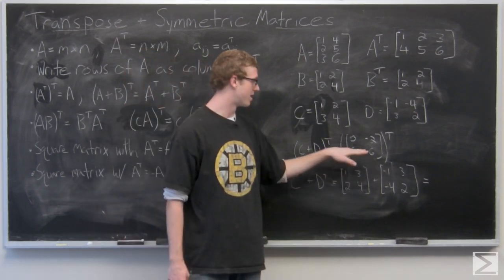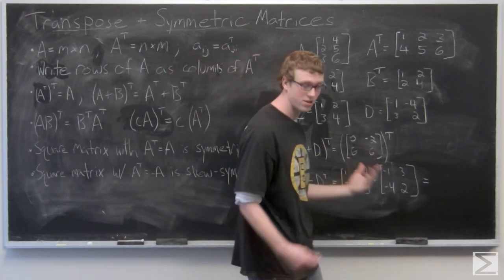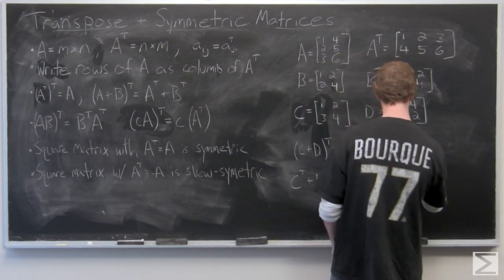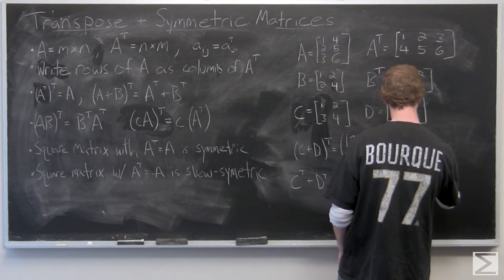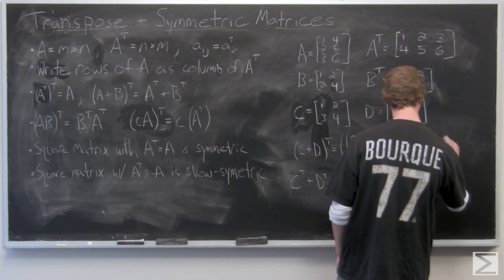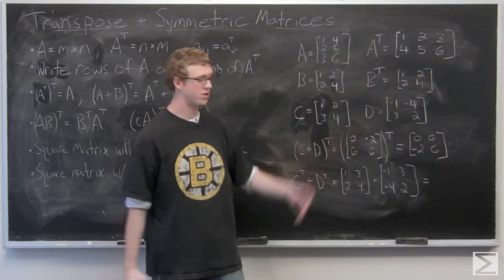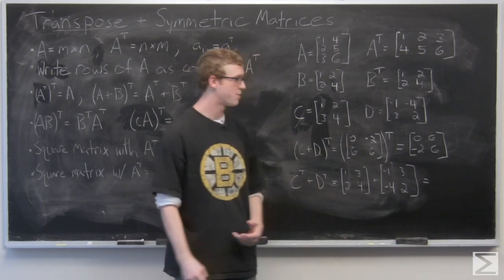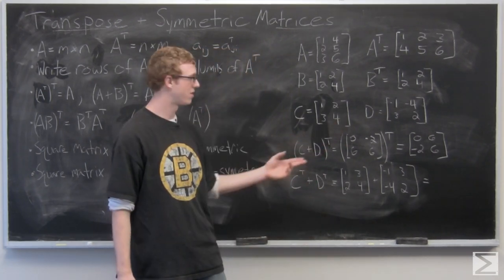We've already added together C and D here. Add component-wise. So your C plus D is going to be 0, negative 2, 6, 6. And just take the transpose of that. So the resultant transpose C plus D transpose is 0, 6, negative 2, 6.